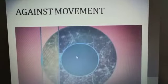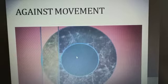Now let's see the against movement. Here, when you see that the retinoscope and the retinal reflex are moving in opposite directions, if you get this type of movement, you need to neutralize it with the help of minus lenses or concave lenses.